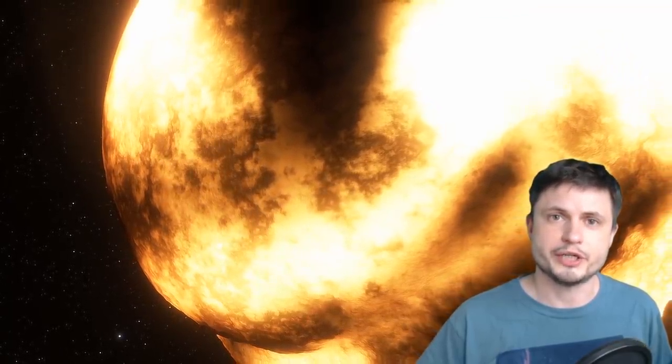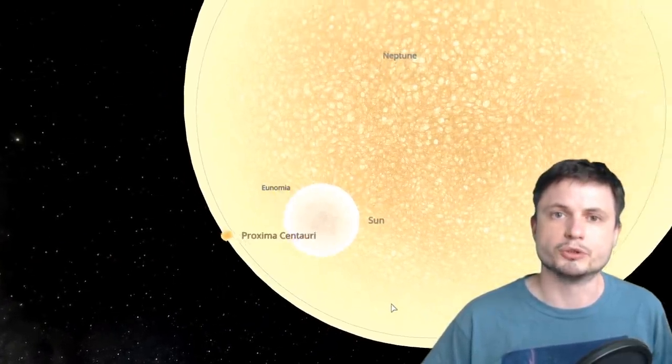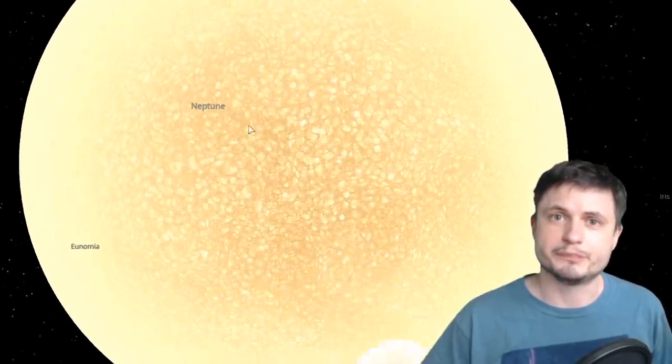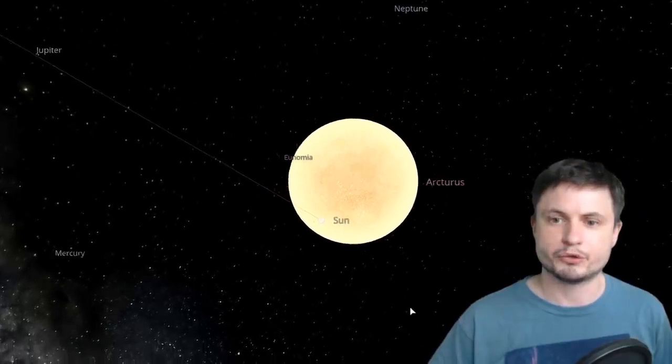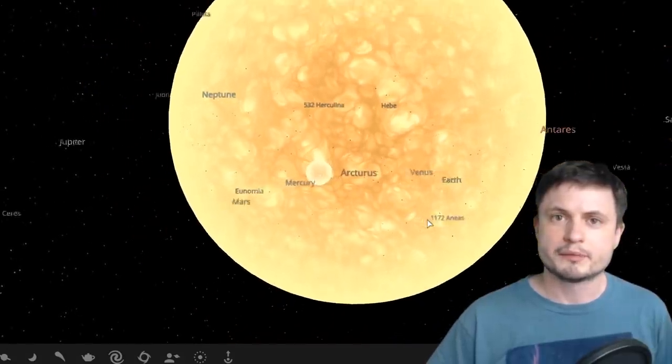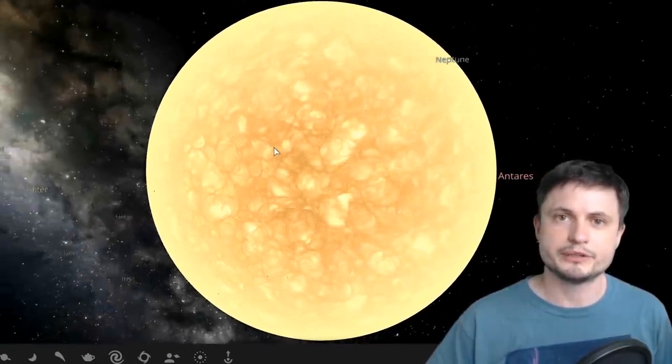So these large supergiants in general do not really look like a lot of simulations and illustrations portray them to be. They're not just these spherical balls of matter and energy. Even our beautiful sun is not, as it shifts around and changes its shape just slightly due to various activities. But the larger and the more active star is, the more likely it's going to change its shape even more. So as we go with larger and larger supergiants, like for example Antares, its shape becomes a lot more unpredictable. It's more of a plasma cloud-like formation that also changes its shape quite dramatically, quite frequently.